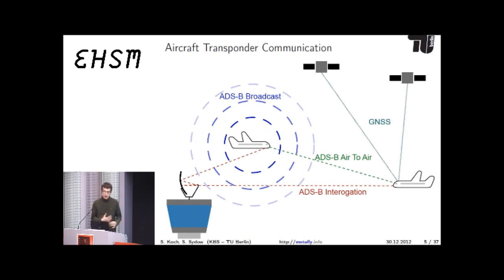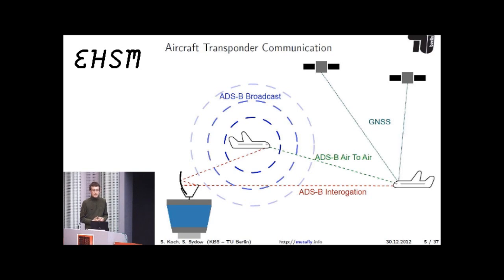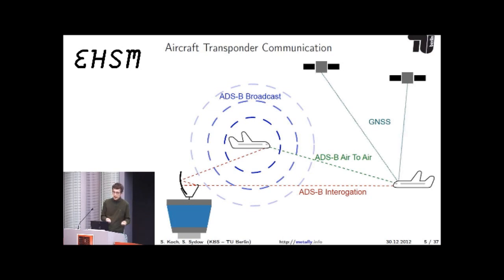Aircraft transponders started out as an enhancement to normal radar. When the plane was hit by a radar pulse, there was at the beginning just a filter cascade which had a specific echo received at the ground station and could be transcoded into an identifier number. Over time the whole thing got more sophisticated, real hardware and processors got in, and nowadays we also have question-reply style communication for the transponder.